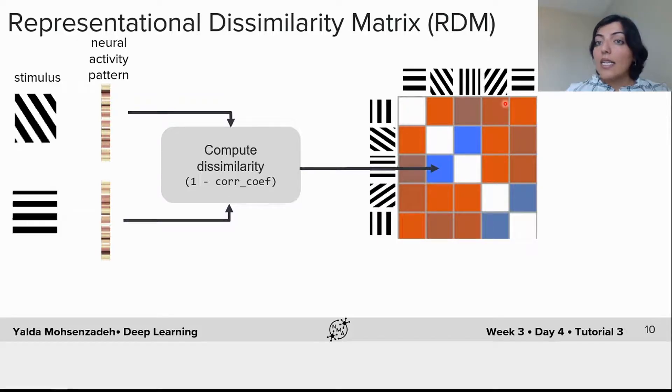Here we are going to use one minus correlation coefficient. Then we construct a matrix where each row and column of these metrics is indexed by one of the stimulus in the stimulus set, and you would assign the dissimilarity measure between each pair to an element indexed with their corresponding stimuli. This matrix is called representational dissimilarity matrix.